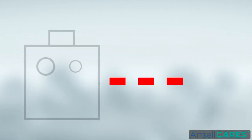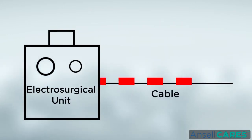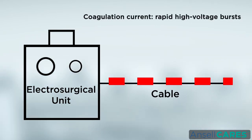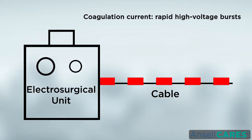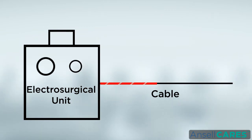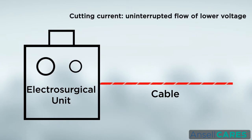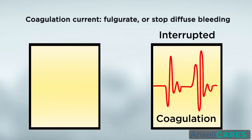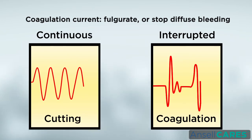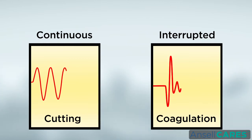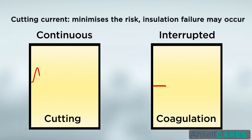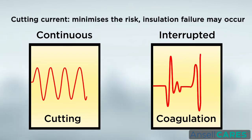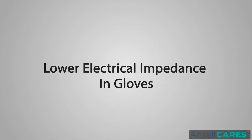Solution: usage of low voltage current is preferred. Electrosurgery equipment allows the use of coagulation or cutting waveforms of current. Coagulation current is released in rapid high voltage bursts to desiccate tissue and cause hemostasis, while cutting current comes out in a lower voltage uninterrupted flow to dissect tissue. In most cases, cutting current should be used for both cutting and coagulation. Coagulation mode is really only necessary when the need to fulgurate or stop diffuse bleeding on highly vascularized tissue is needed. Using the lowest voltage reduces wear on the insulation and minimizes the chance that current escapes through hairline cracks.